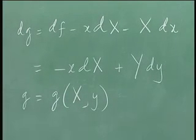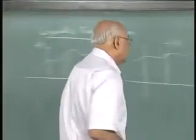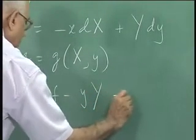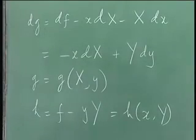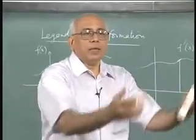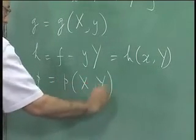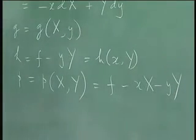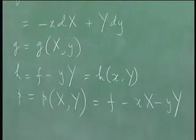You could go further and define a function h which is a function of little x and capital Y, by defining h = f − y·Y, giving h = h(little x, capital Y). You make one more Legendre transform, and finally you could transform to capital X and capital Y altogether, defining a function p = p(capital X, capital Y) = f − x·X − y·Y. You can generalize this to any number of independent variables x, y, z, etcetera.